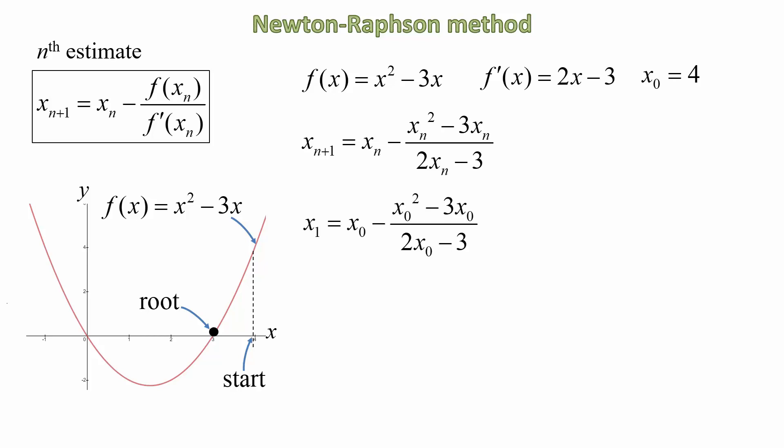And for our first estimate, x₁, we can replace n with 0. And that will give us x₁. Now we substitute the value that we know for x₀, which is x₀ = 4. And going through the process of computation, we end up with x₁ = 3.2. So our first estimate was 4, and our next estimate is 3.2. Remember, the exact value is 3.